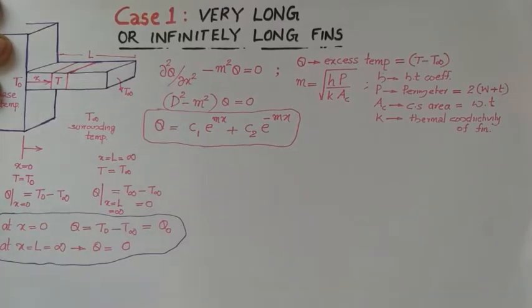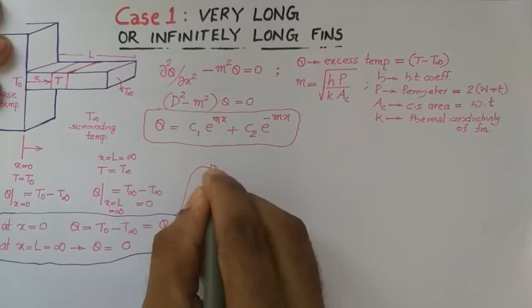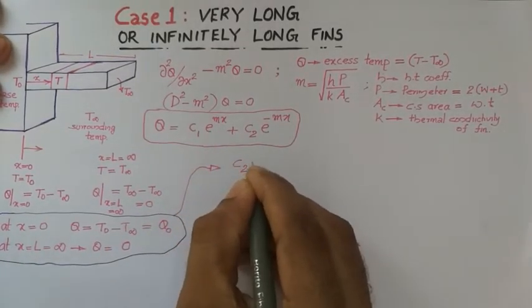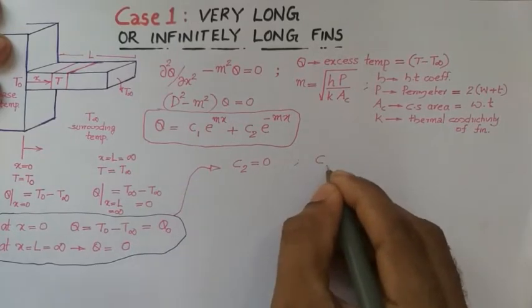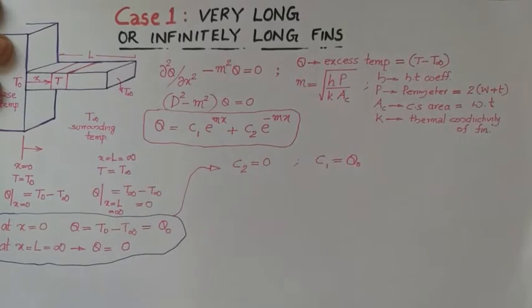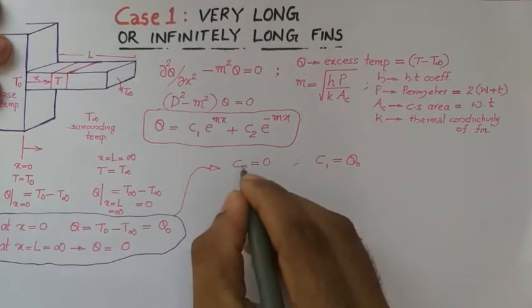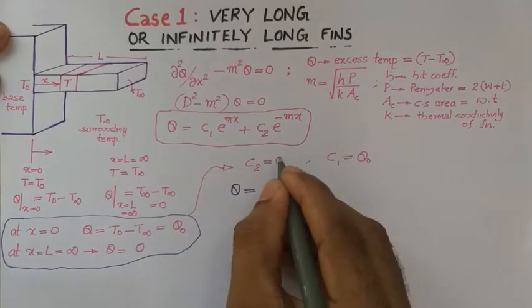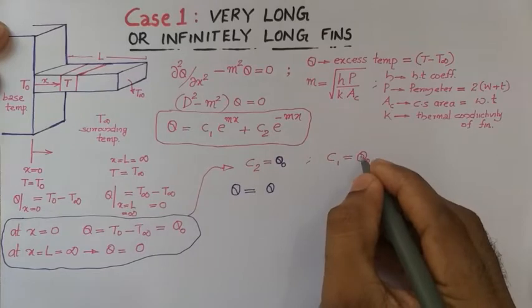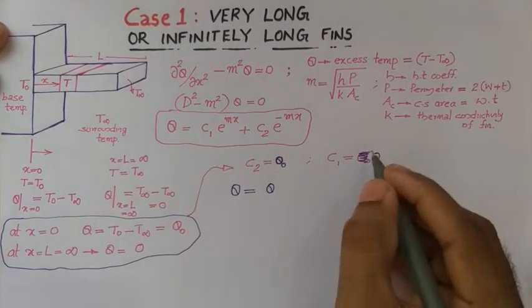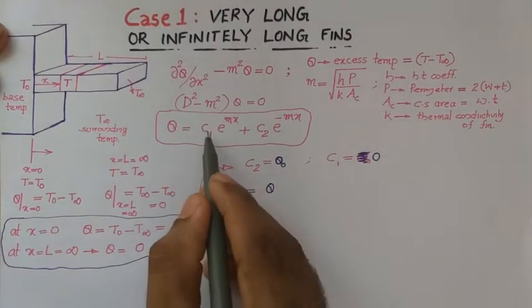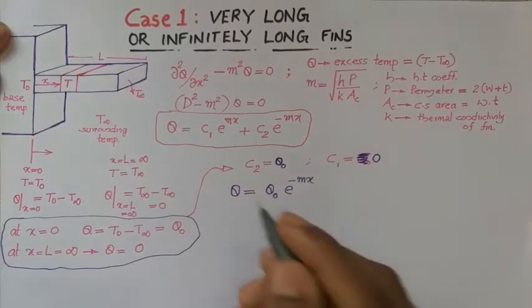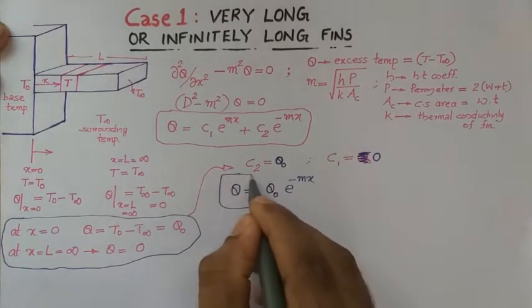Applying these boundary conditions to the general solution, we find that c2 equals 0 and c1 equals theta-0, where theta-0 is t0 minus t-infinity at the base surface. Substituting c1 equal to theta-0 and c2 equal to 0 into the general solution, the final solution is: theta equals theta-0 times e raised to minus mx.